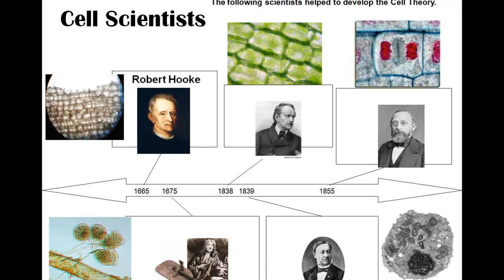What Hooke did is he took cork — which is dead bark cells — made a really thin shaving, and put it under a simple microscope. He was looking at dead cork cells, which are fairly large and empty inside since the cells are dead. Cork was used a lot for closing liquid containers. He actually saw rectangular blobs that reminded him of the cells — the rooms — that monks lived in: hallways with rooms on both sides. So he called these things cells, and the name has stuck. It's not like jail cells, but the rooms in a monastery.